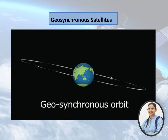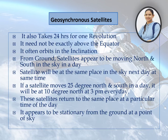Geosynchronous satellites are satellites placed in a geosynchronous orbit. The orbital period of these satellites is also the same as the earth's rotation period. However, the geosynchronous orbit is not exactly aligned with the earth's equator — the orbit is known as an inclined orbit. From the ground, it will appear to oscillate daily around a fixed point, with the satellite appearing to move north and south in the sky in a day. The satellite will be at the same place in the sky the next day at the same time, returning to the same position at a particular time of day.